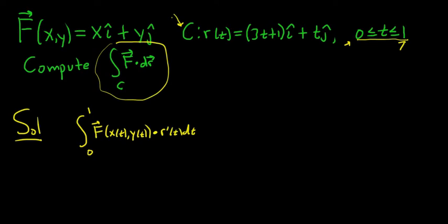So here in this problem this is our x of t and this is our y of t. Okay so all we do is we plug in x and y into this function here and then r prime of t in this problem. Well the derivative of 3t plus 1 is 3. So you get 3 i hat and then the derivative of t is 1 so we get plus 1 j hat.